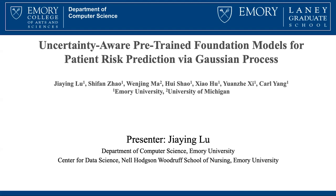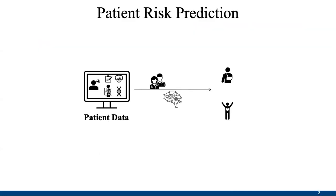The title of this work is called 'Uncertainty-Aware Pre-Trained Foundation Models for Patient Risk Prediction via Gaussian Process.' In this project, we are aiming to do one of the fundamental clinical applications, which is Patient Risk Prediction — a task to estimate the probability of a patient experiencing a health outcome. We aim to develop both accurate and reliable models so that they can help care providers proactively identify and address potential health risks.